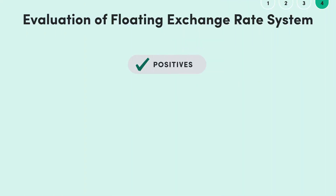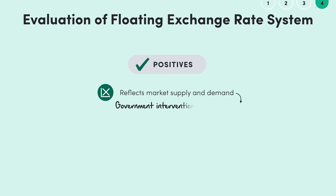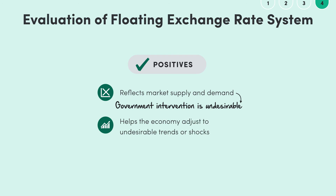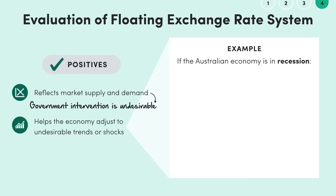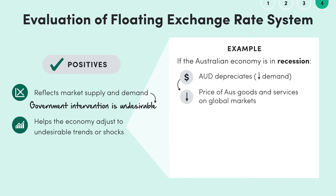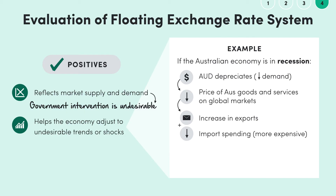On the positive side, economists generally prefer when the value of the exchange rate reflects market supply and demand rather than being determined by the central bank, as government intervention is generally undesirable. A floating exchange rate can also help the economy adjust to undesirable trends or shocks. For example, if the Australian economy is in recession, these bleak economic conditions will likely cause an Australian dollar depreciation, making Australian goods and services cheaper on global markets, encouraging overseas consumers to buy Aussie products. Import spending will fall, net exports will increase, boosting aggregate demand and economic growth, helping to mitigate the initial recession.